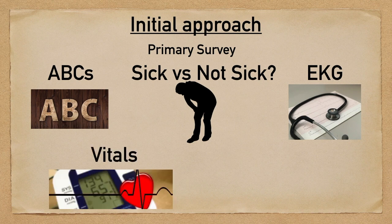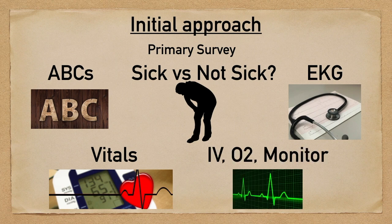As all of this is going on, you're also going to want to obtain the patient's vital signs. This will include blood pressure, heart rate, temperature, respiratory rate, and oxygen saturation. You might also want to get a point-of-care glucose, as things like DKA can cause upper abdominal pain as well. Lastly, the patient will need to be hooked up to cardiac monitor, pulse oximetry, and an IV should be established.